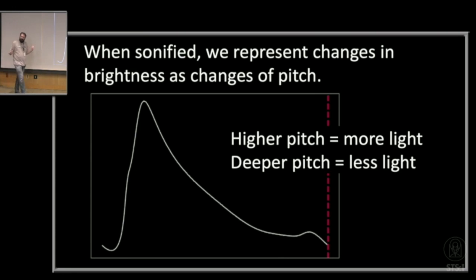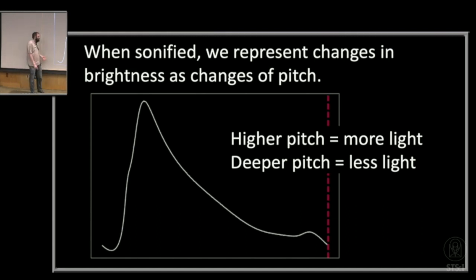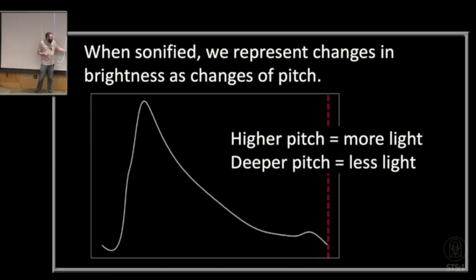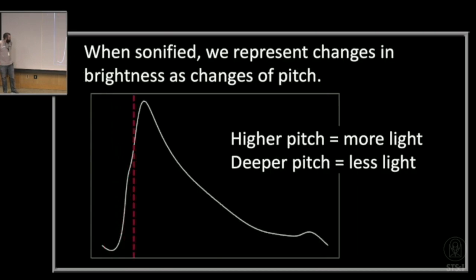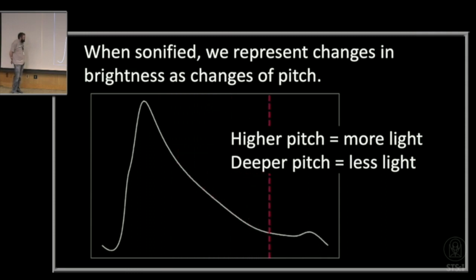That's what a Kepler light curve sounds like — not literally, since there's no sound in space. We're using the sound to represent what the data points are doing. If you were really careful, at the very end you can detect that second bump toward the very end of the light curve — that little wobble corresponds to the small bump visible on the plot itself.